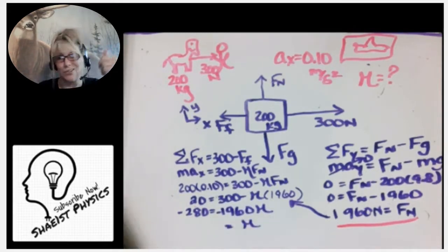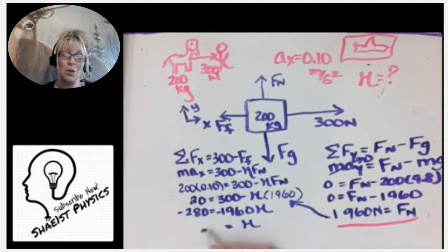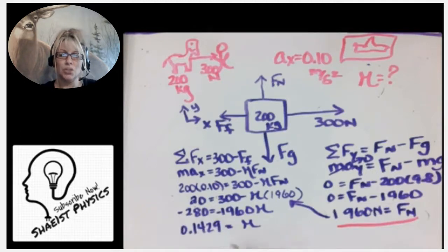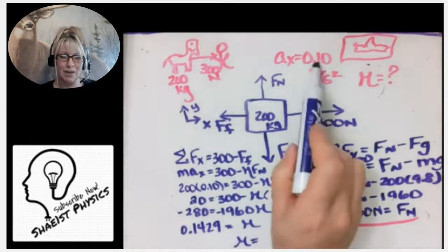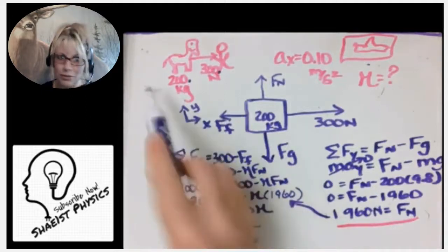Now we just have coefficient of friction to solve for, and if I remember correctly, that's what we were looking for. So let's go ahead and do that division. We're going to find the friction force between the hooves and the ground: 0.1429 something something something is what the calculator spits out.